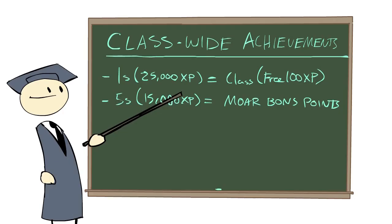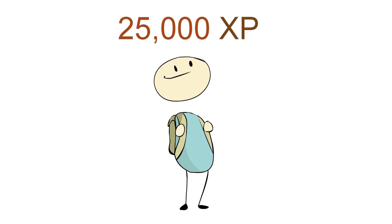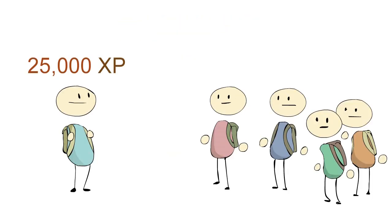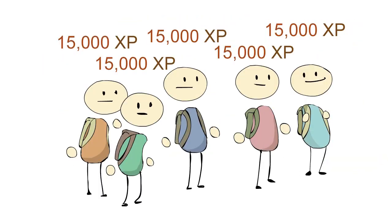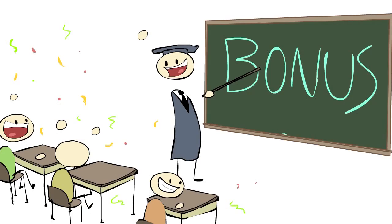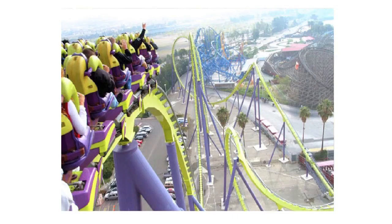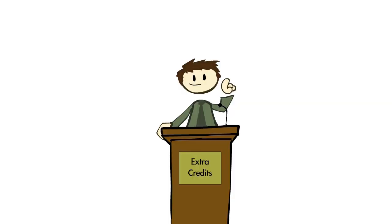Say you set up class-wide achievements, such as, if one student gets 25,000 experience, the whole class gets a free bonus 100 XP. Or, say, five students get 15,000 experience, the whole class gets bonus points. Or, maybe a field trip or something. Whatever you prefer. With this sort of reward system, you encourage the whole class to be rooting for one another.